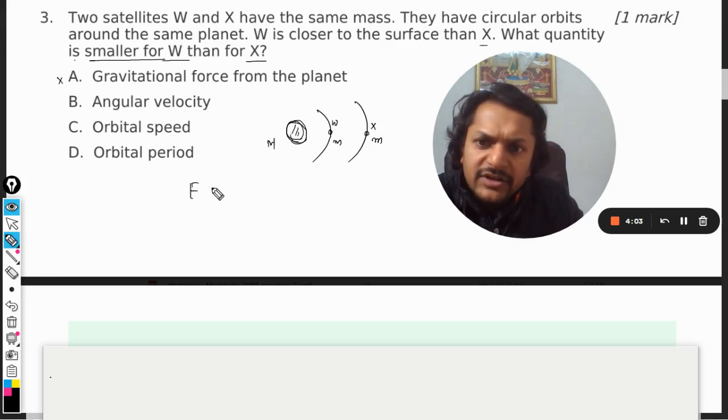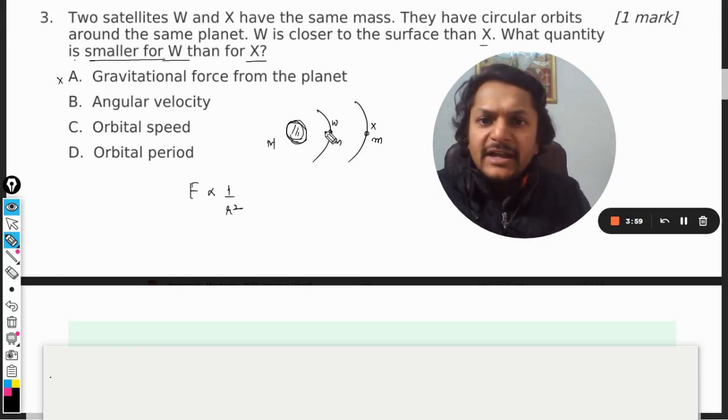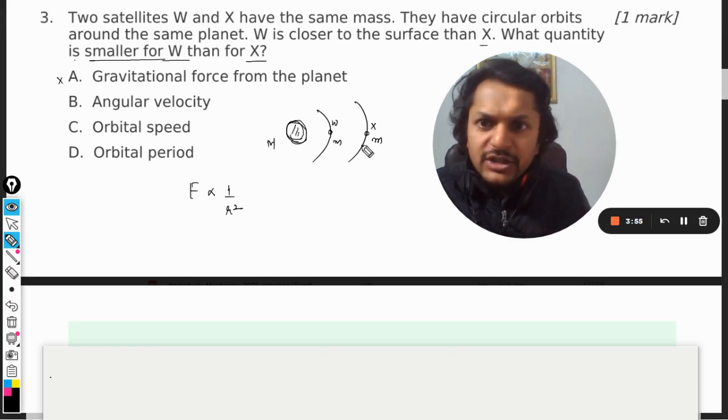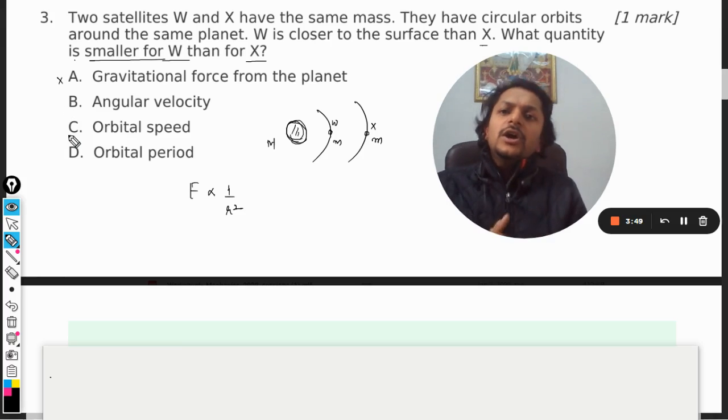Because the gravitational force is inversely proportional to the square of the distance between them. And for W, distance is lesser and force is inversely proportional, so it is going to be more. Angular velocity, orbital speed...